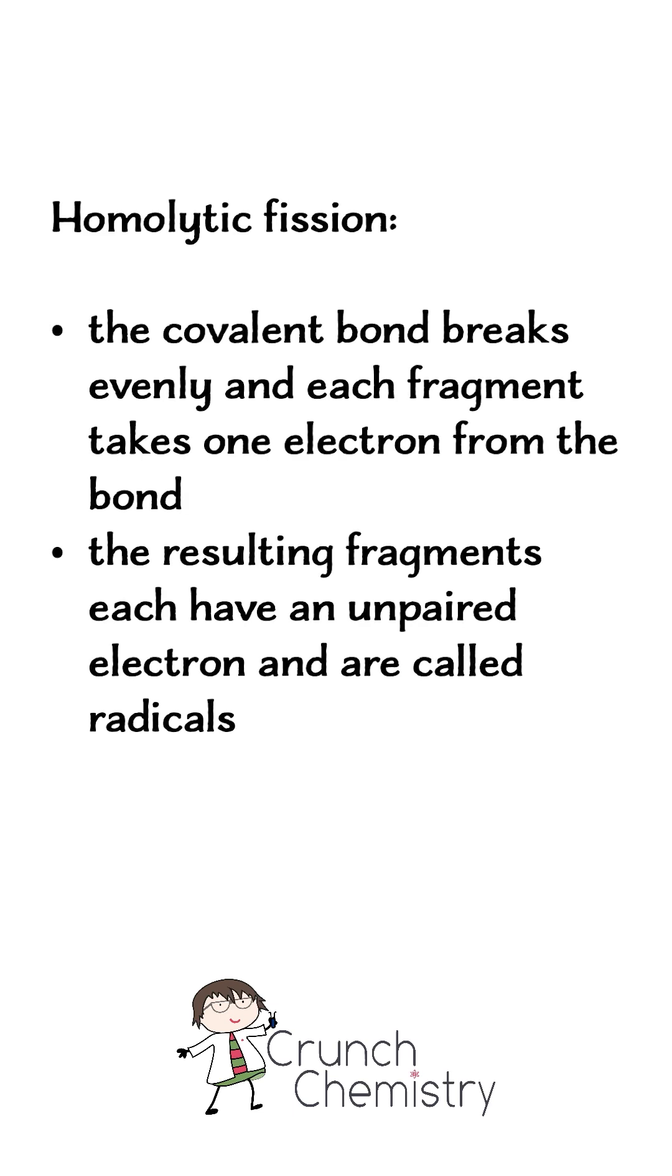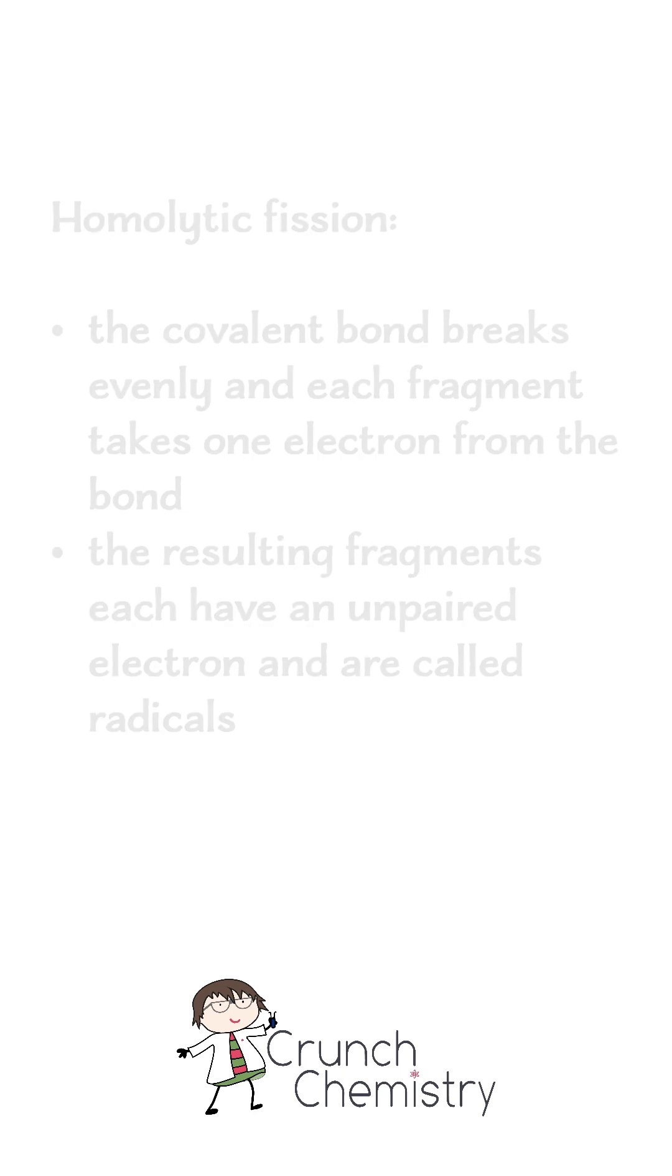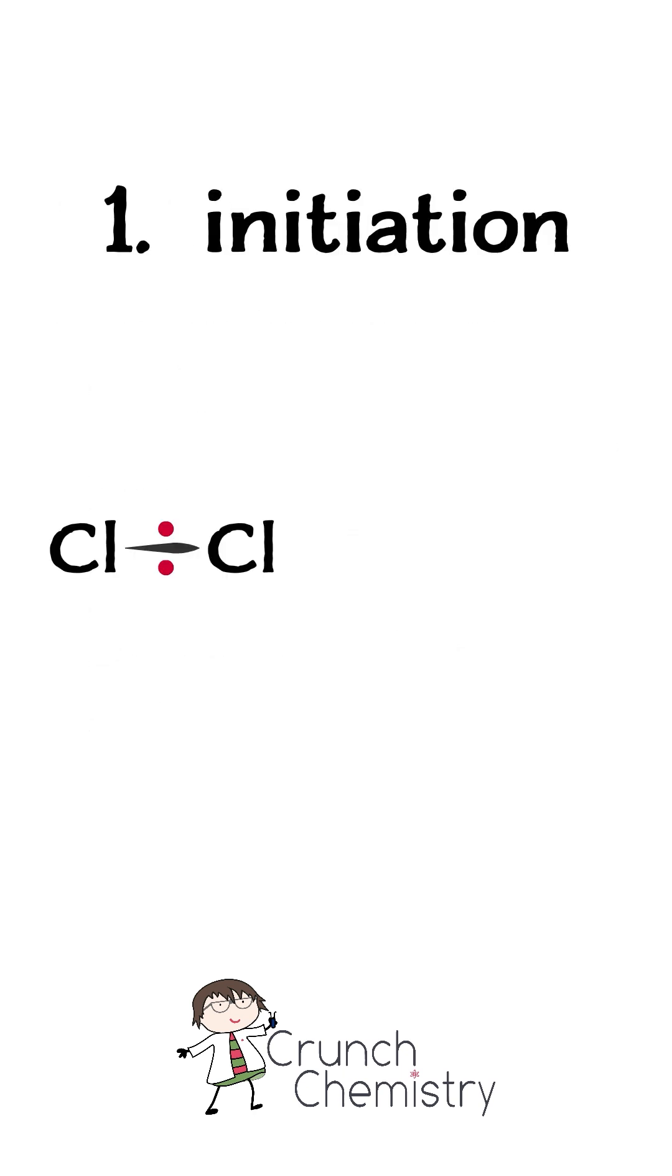Homolytic fission of a covalent bond is when the bond breaks evenly, and each fragment takes one electron from the bond. The resulting fragments each have an unpaired electron, and are called radicals. Radicals are very reactive species. When we're drawing this out, we need to use half-headed arrows, because we're only moving one electron at a time.